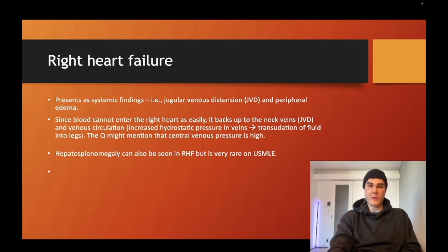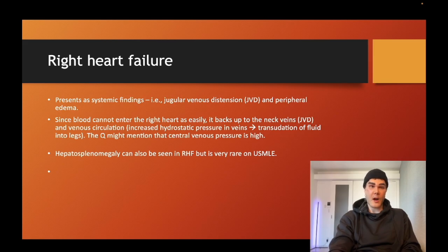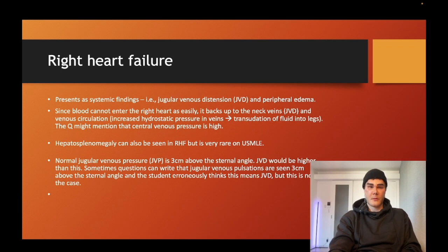Hepatosplenomegaly is technically a right heart failure finding, but it doesn't commonly appear on USMLE. They might occasionally say the liver edge is palpable, and there is something called nutmeg liver — chronic congestion within the liver due to right heart failure. But for the overwhelming majority of right heart failure scenarios on USMLE, you just need to know JVD and peripheral edema. And remember: three centimeters above for JVP is normal.